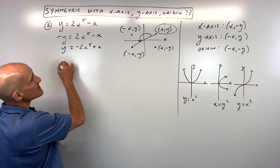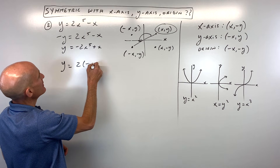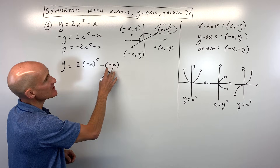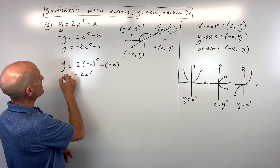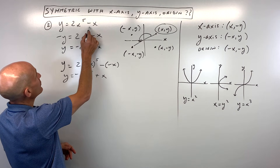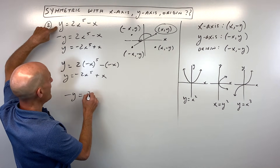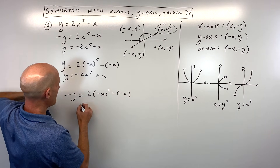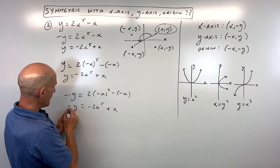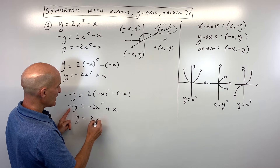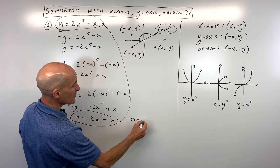How about the y-axis? Replace y with y and x with negative x, putting the substitution in parentheses. A negative to an odd power is negative, giving us negative 2x to the fifth. A negative times a negative is positive. That does not look like the original. For the origin, making both negative: negative y equals negative 2x to the fifth minus — wait, a negative times a negative is positive — and multiplying through by negative one gives us y equals 2x to the fifth minus x, which is the same as the original. So it's symmetric with respect to the origin — a 180-degree rotation about the origin.